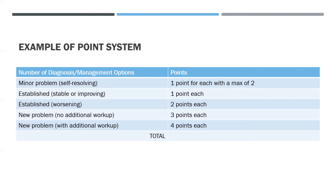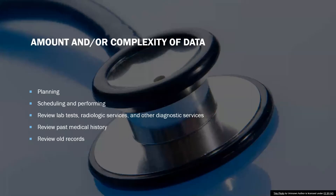E&M auditing tools are extremely useful when figuring out the level of service. They are pre-formatted, which makes it easy to stay consistent when determining the MDM for each individual encounter. Audit tools include a section for each of the three key components: history, exam, and MDM. These forms vary from payer to payer — some are based on the 1995 documentation guidelines and some on the 1997 DGs. What's shown on screen is just one example of a point system for number of diagnoses and management options.